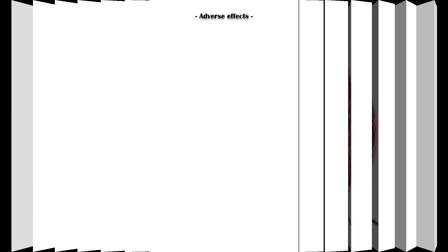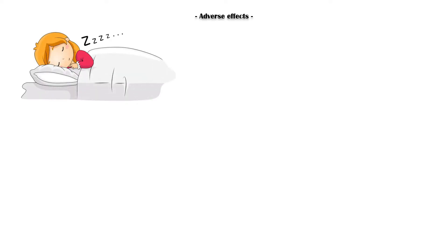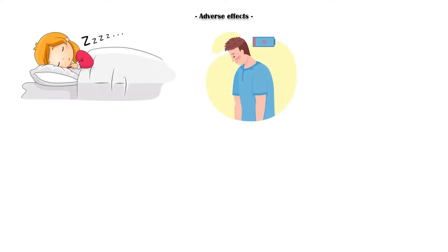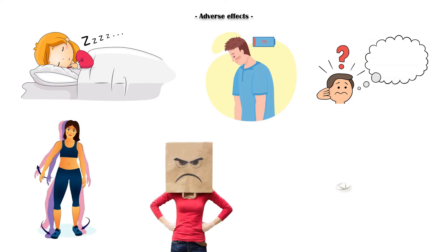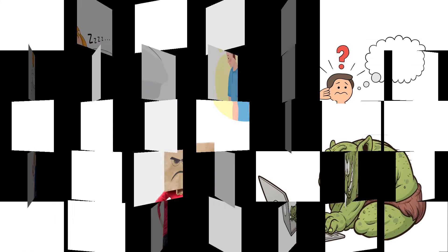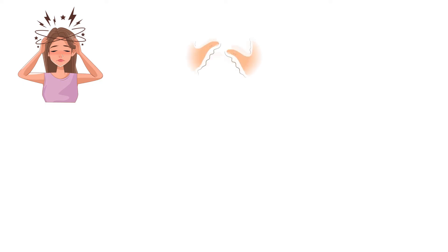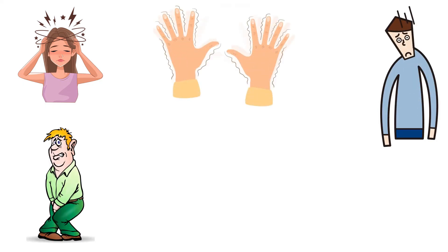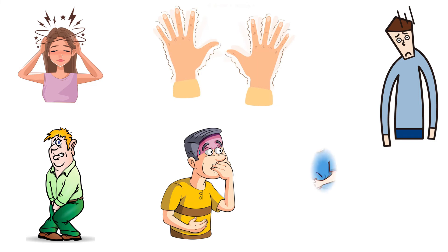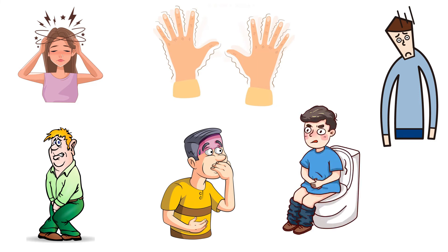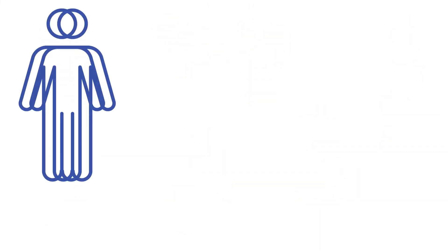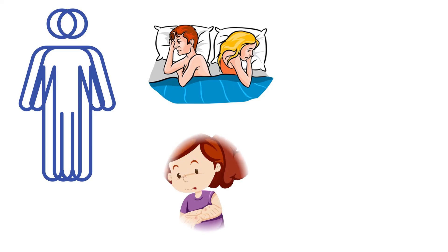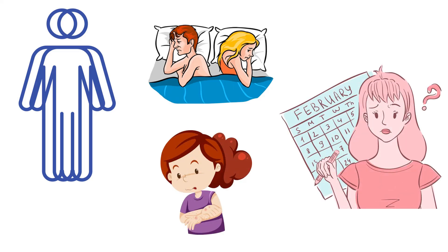Some common adverse effects of diazepam include the following: sedation, fatigue, confusion, ataxia, irritability, disinhibition, headache, tremors, dystonia, urinary retention and incontinence, nausea, constipation, diplopia, libido changes, rash, and menstrual irregularities.